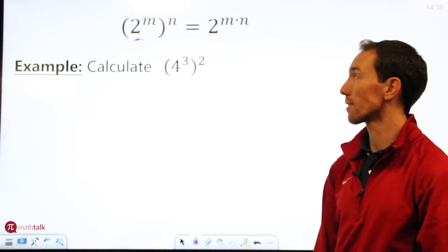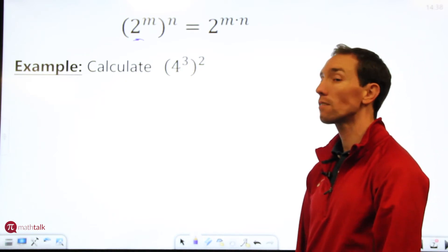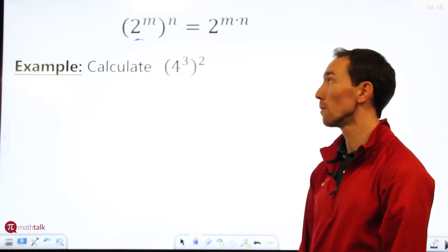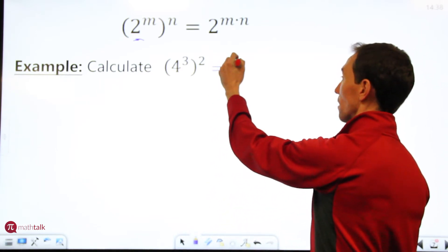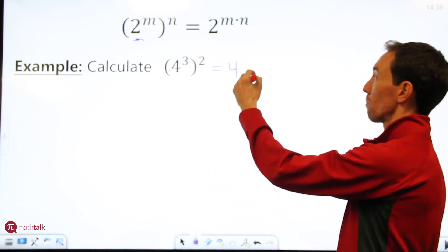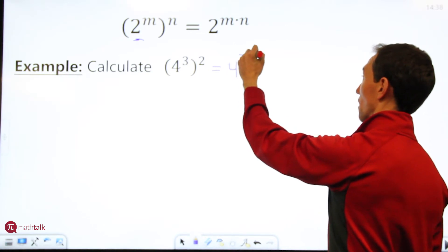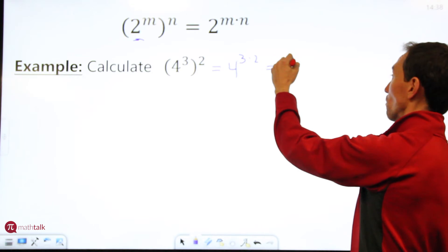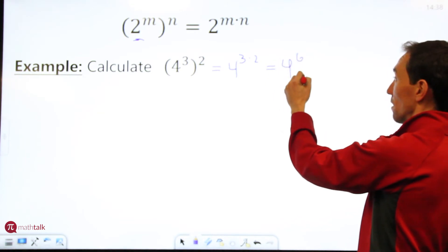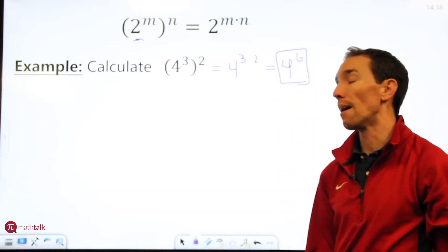So let's look at one example. It says calculate 4 to the third to the second or 4 cubed squared. So the rule says what we do is we keep the base which is 4 and we multiply the exponents together. So that would be 4 to the 3 times 2 which is 4 to the sixth and that's our answer. It's as simple as that.